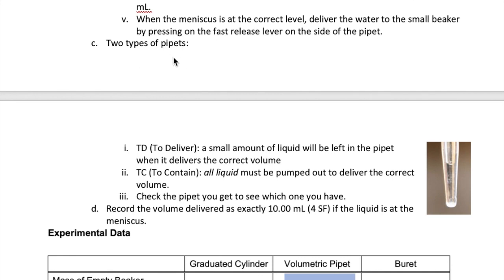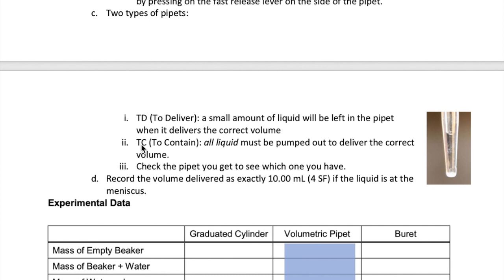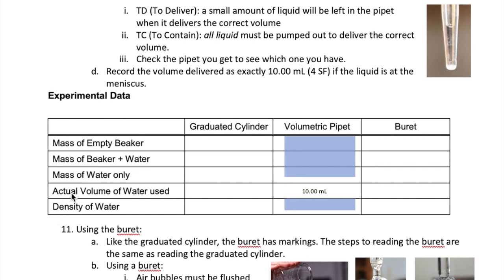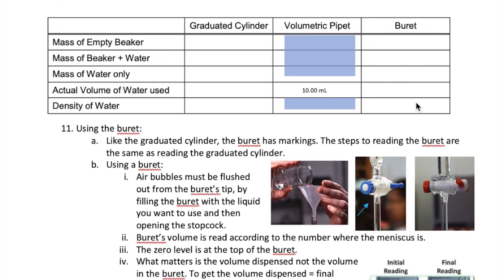There are two different types of pipette you might see in the lab. If you see the letters TD written on the side, it means the pipette will have a small amount of liquid left in it when 10 milliliters has been delivered — so don't push out that last bit of water. However, if you have a pipette with TC written on the side, all the liquid has to come out in order to deliver 10 milliliters. Make sure you look at your pipette to determine which type you have. The only correct volume to record when using a volumetric pipette is 10.00 milliliters — that's the only number you can write here.